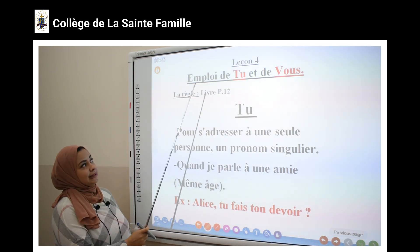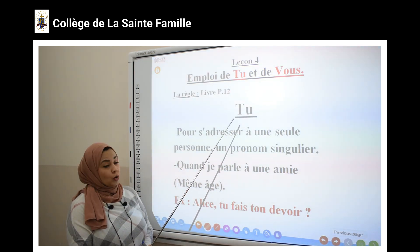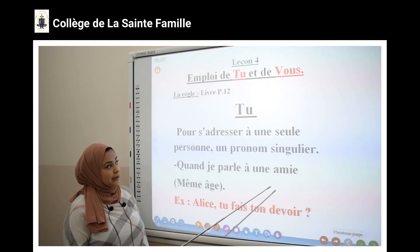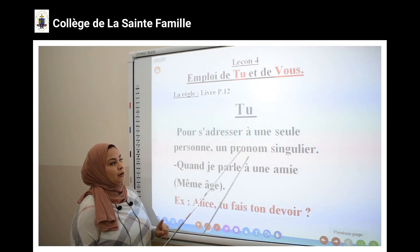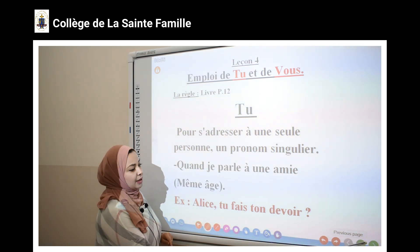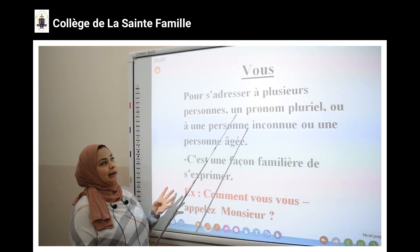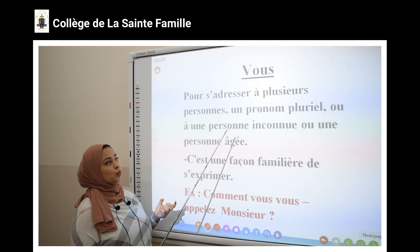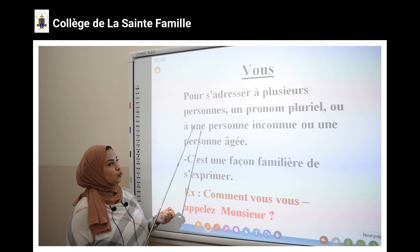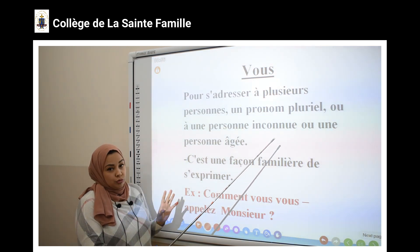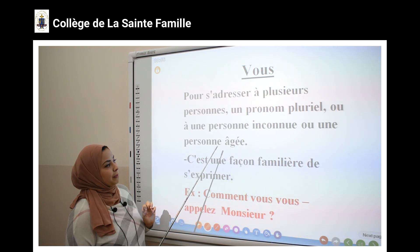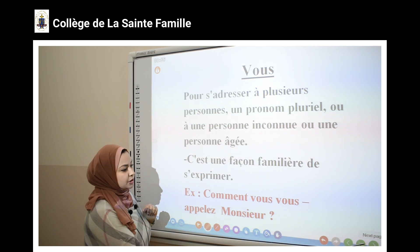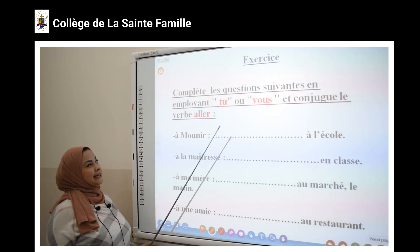Alors, qu'est-ce qu'on a dit ? On a dit qu'on utilise le pronom « tu » quand je parle avec une amie ou bien une seule personne. C'est un pronom singulier. Et j'utilise le pronom « vous » quand je parle avec plusieurs personnes — c'est un pronom pluriel — ou quand je parle avec une personne inconnue, c'est-à-dire je ne la connais pas, ou une personne âgée.